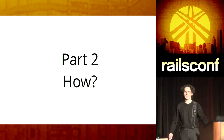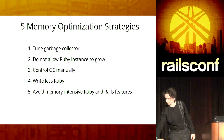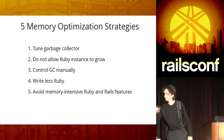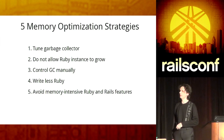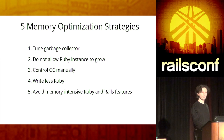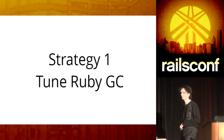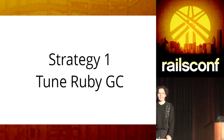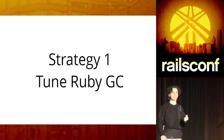And now the interesting part: how do we optimize memory? I want to talk about five strategies to do this. The first one is to tune your garbage collector. If the garbage collector is the thing that makes your application slow, you can probably change settings.